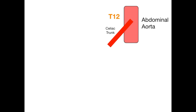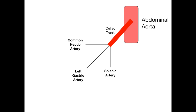From the celiac trunk, there are three major arteries that branch off. Each of these three arteries will give rise to further arteries downstream, but you first need to understand how the celiac trunk splits. The three important arteries are the common hepatic artery, the left gastric artery, and the splenic artery.